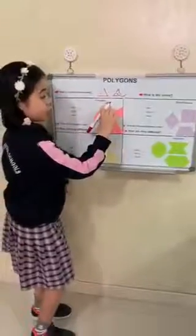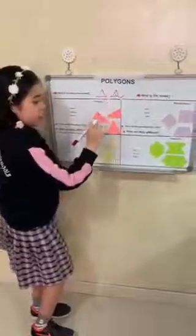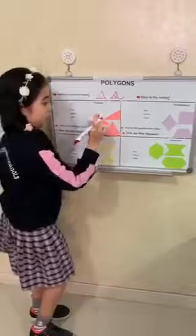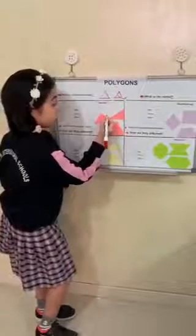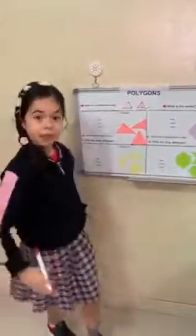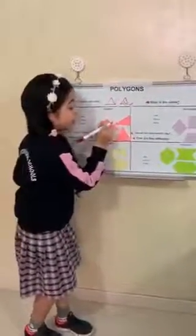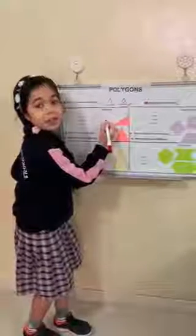Our shape today is triangle. This shape is called triangle. Let's count the sides: one, two, three. Let's count the vertices. Where two sides meet — they meet here. So this is the vertex.